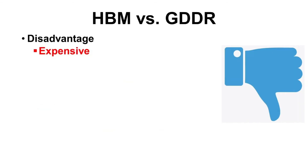How about the disadvantage? It is expensive. It uses TSB and silicon interposer which increase product cost. So still GDDR is used for GPU.